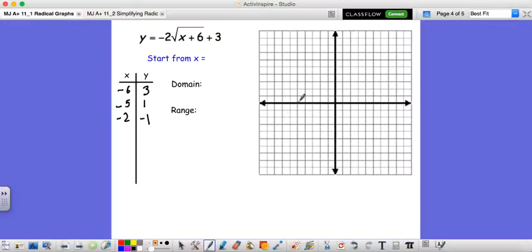And now we can probably get a decent idea for our graph. (-6, 3), then we have (-5, 1), then we have (-2, negative 1). Something like that.